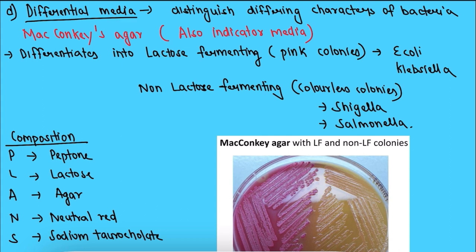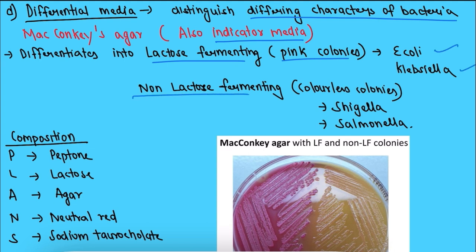Now coming to differential media, which is used to distinguish differing characters of bacteria. The most famous one is MacConkey's agar, which is also an indicator medium. It differentiates lactose-fermenting bacteria, which form pink colonies like E. coli and Klebsiella, from non-lactose fermenting bacteria, which form colorless colonies like Shigella and Salmonella, as seen in the image. This portion is lactose fermenting.